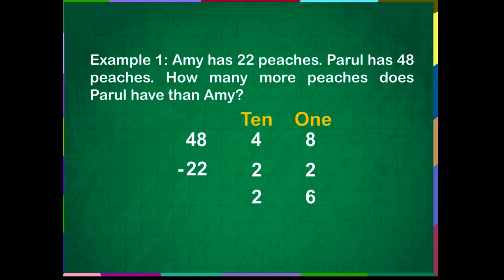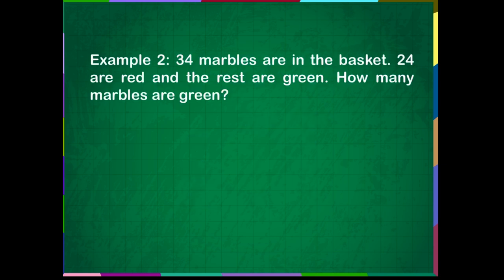So, 48 minus 22 is equal to 26. The difference is 26 peaches. Example 2.